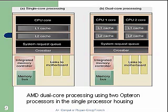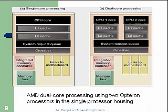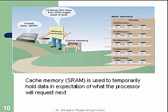Here's a diagram of the AMD dual core processor using two Opteron processors in a single processor housing. One of AMD's big innovations was crossbar technology and integrating the memory controller — which for Intel is on the north bridge — directly into the CPU. This was a significant performance improvement and AMD took the lead in CPU performance for quite a while until Intel came up with better processors. Competition is what really pushes this technology. Here's also a diagram showing how cache memory is used to temporarily hold data in anticipation of what the processor will require next — very important engineering has gone into developing cache performance.